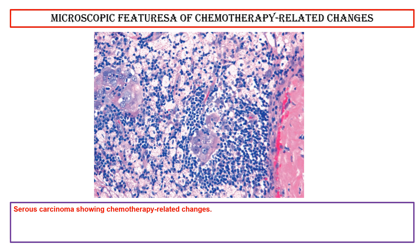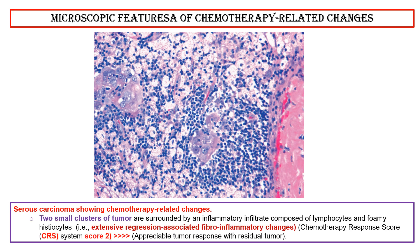Microscopic features of chemotherapy-related changes: This photo shows a serous carcinoma showing chemotherapy-related changes. We see two small clusters of tumor surrounded by an inflammatory infiltrate composed of lymphocytes and foamy histiocytes — that is, extensive regression associated fibro-inflammatory changes. Chemotherapy Response Score system CRS score 2, meaning appreciable tumor response with residual tumor.